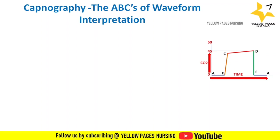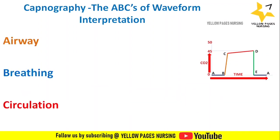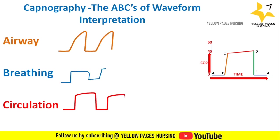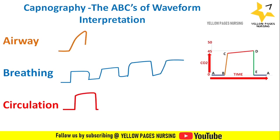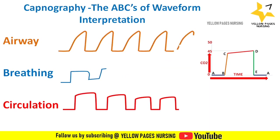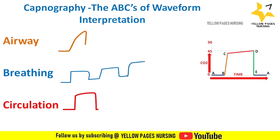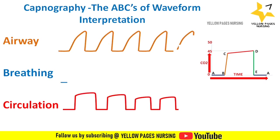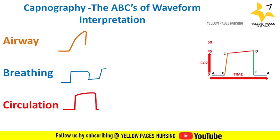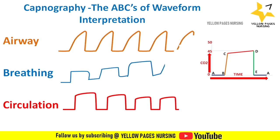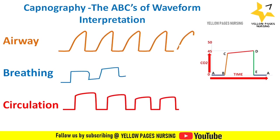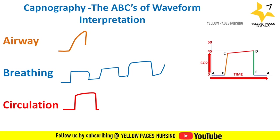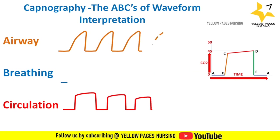First comes A — Airway. Here you can check for signs of an obstructed airway, which is indicated by steep upsloping of the expiratory plateau. Next comes B — Breathing. Check the ETCO2 reading and waveform; here you can see an elevated respiratory baseline. Next comes C — Circulation. Check the trends of ETCO2 waveforms for 15 to 30 minutes or longer and identify if they are increasing or decreasing.